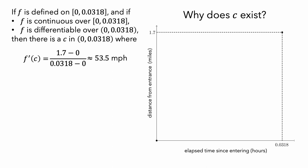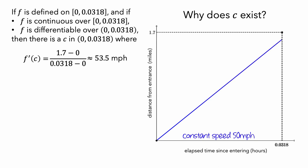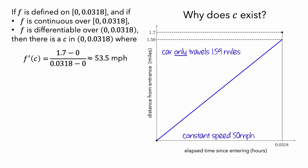Let's first think about whether it would be possible for the car to be traveling the speed limit — that is, a constant speed of 50 miles per hour — the entire time it is in the tunnel. In this case, a graph of the car's distance versus elapsed time would look like this. We can see on the graph that when 0.0318 hours have elapsed, the car's distance from the tunnel entrance is 1.59 miles. That is, if the car's instantaneous speed was always 50 miles per hour, then it would only travel a distance of 1.59 miles, so it couldn't have reached the end of the tunnel in the elapsed time.